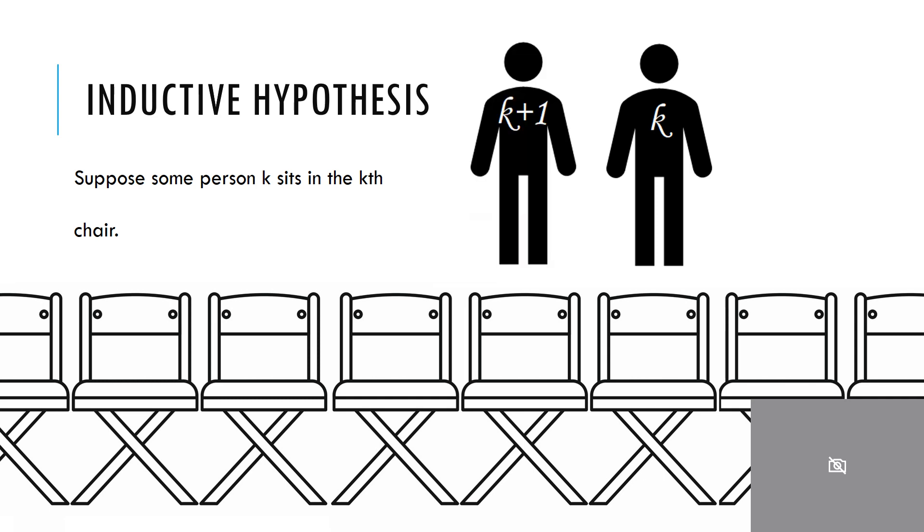That's all fair and good. So how can I prove that every person will sit in their corresponding chair? I can't use my regular method but this is where strong induction comes in.